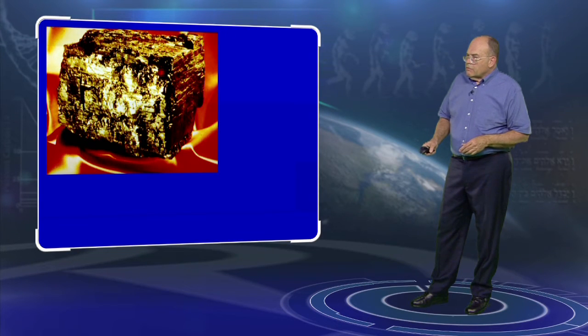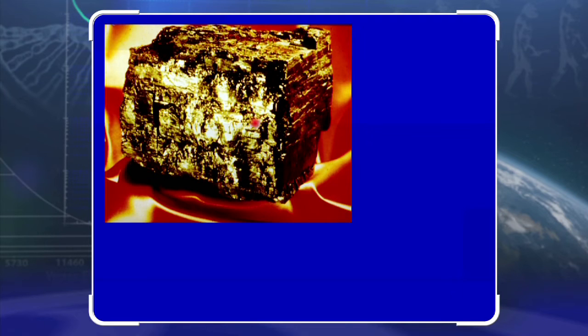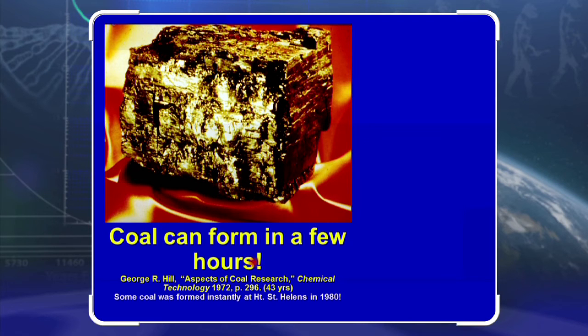This is a piece of anthracite coal — it looks totally natural. Anthracite coal is the hardest, densest, blackest coal there is. And yet this piece of anthracite coal, which looks totally natural, was made in a laboratory in only a few hours back in 1972. Since the eruption of Mount St. Helens in 1980, we've actually seen coalification and fossilization occurring, which proves it doesn't take millions of years to get coal or fossils.